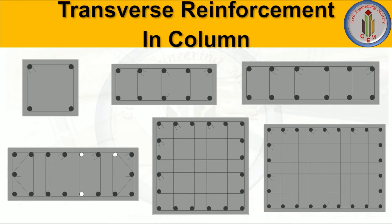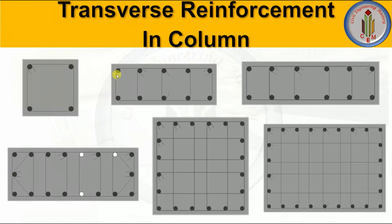Now let's look at the arrangements of longitudinal bars and lateral ties in columns. If the column is square and we provide only four bars, we provide one lateral tie connecting all four longitudinal bars. If the column has more longitudinal bars, the tie arrangement differs — one tie connects the outer four bars, another connects an inner set of four bars, and a middle tie connects the two central bars.